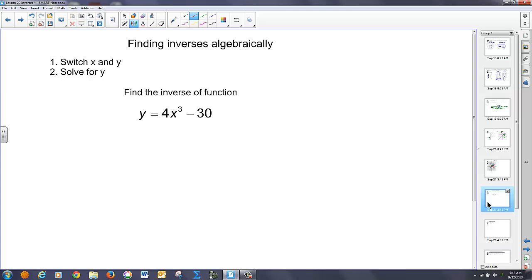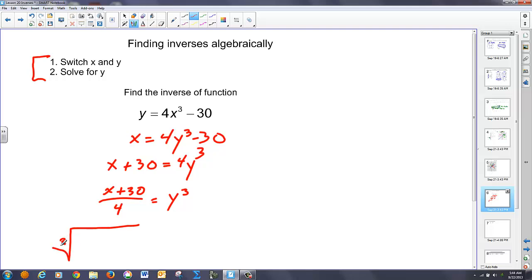So if we want to find inverses algebraically, two steps. Switch the x and the y, and then solve for y. So here's my function. I have a cubic. If I want to find its inverse, I switch the x and the y, so I make this x equals 4y cubed minus 30. I'm going to solve for y. So I bring the 30 over, divide by 4. And if I want y by itself, I've got a cube root. So this is going to be the cube root of x plus 30 over 4. And this is going to be my inverse.